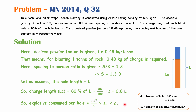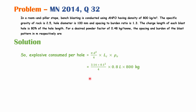Substituting values: π = 3.14, diameter D = 0.1 m (converting 100 mm to meters), charge length = 0.8L, and density = 800 kg/m³. Always convert units to the same system — here density is in kg/m³, so diameter is converted to 0.1 m. This gives the explosive consumption per hole as (π × 0.1² / 4) × 0.8L × 800.